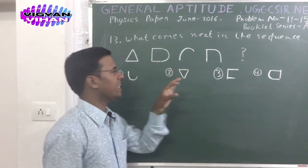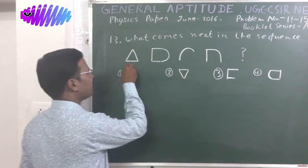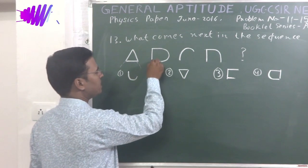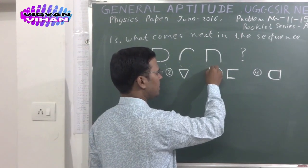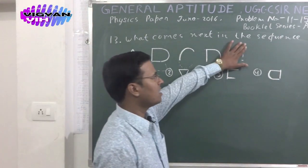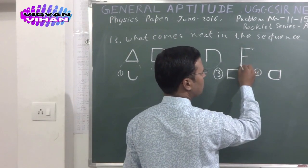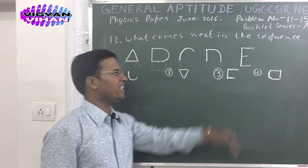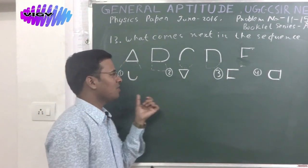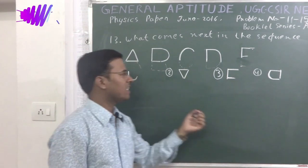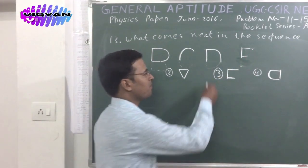If we watch carefully, these are the upper halves of alphabetic letters. This is the upper half of A, this is the upper half of B, this is the upper half of C, this is the upper half of D. Then the next letter would be E according to the logical sequence. If I choose the proper option, we get the upper half of E — the answer is option 3.